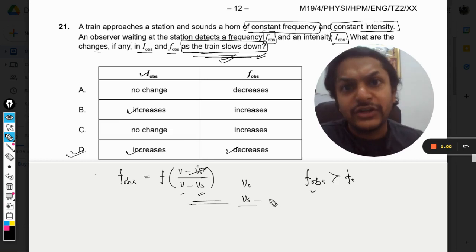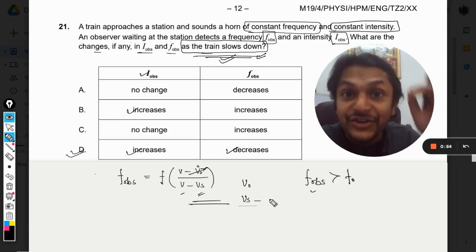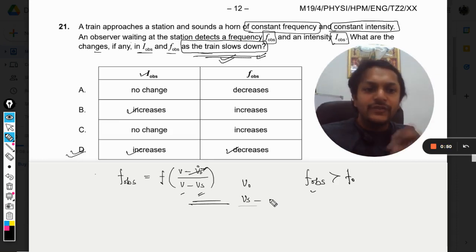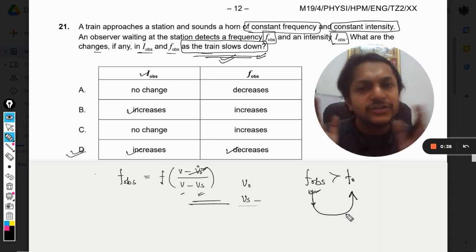But now the velocity of the train is not constant, it is decreasing. That is the new factor they have introduced. So with respect to time, the frequency that is observed is decreasing, and some time later it will become equal to f when the train stops at the railway station.